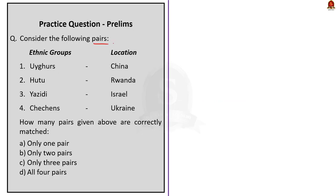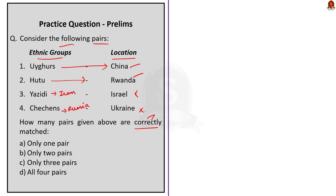This next question is a pair-based question. On one side we have various ethnic groups and on the other side we have their location. We have to find which pairs are correctly matched. Pairs 1 and 2 are correctly matched — Uighurs are an ethnic group from China and Hutus are from Rwanda. The other two pairs are incorrectly matched: Yazidis are mainly located in Iraq, and Chechens are located in Russia. Since only two pairs are correctly matched, the correct answer is Option B.